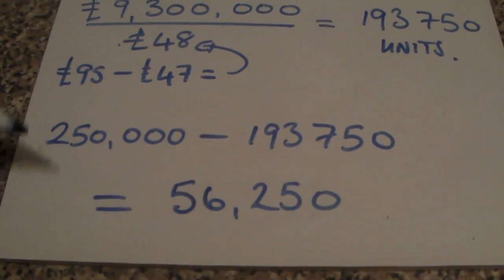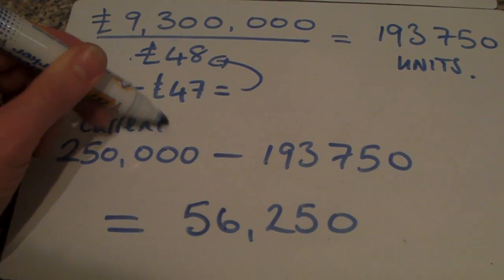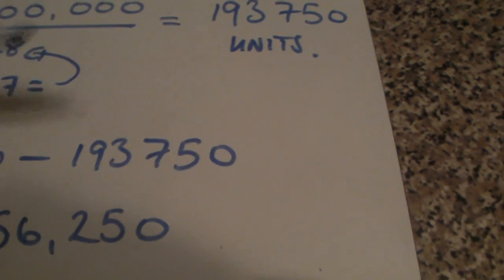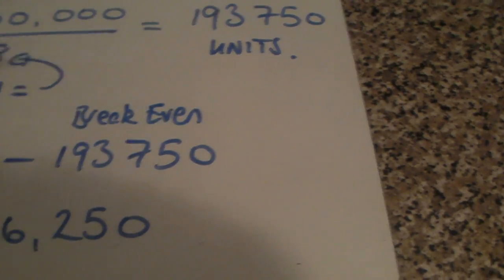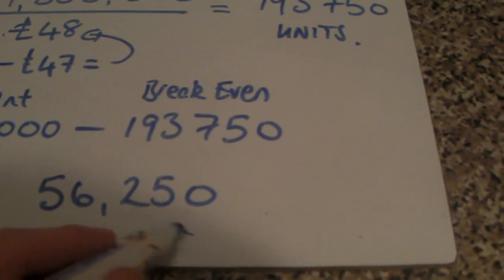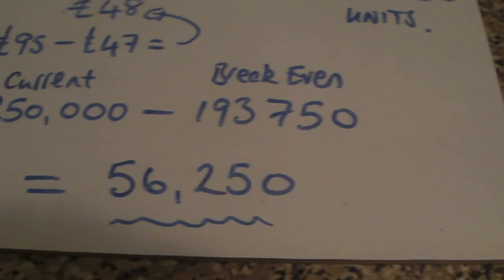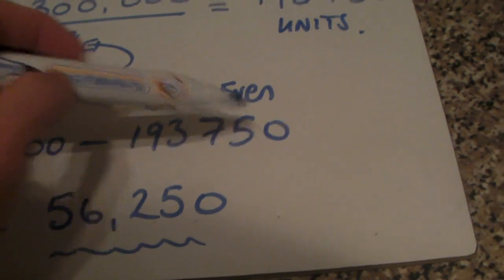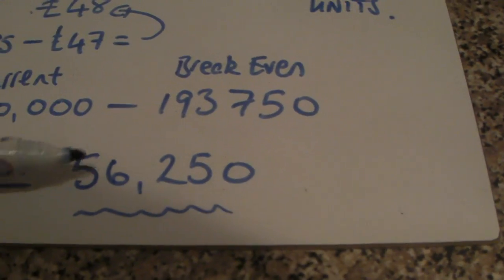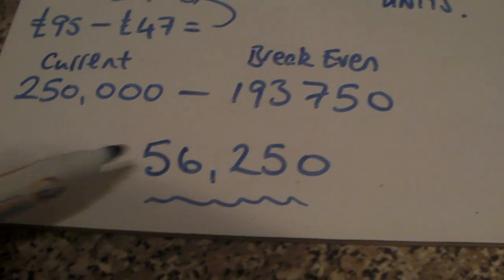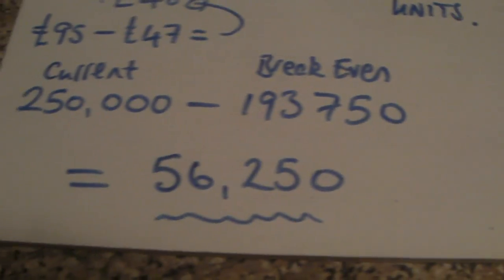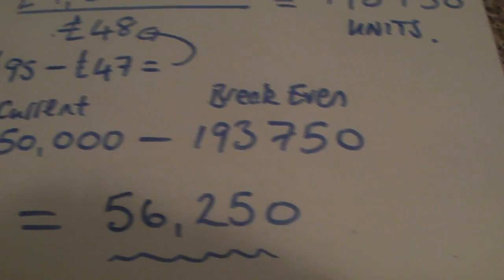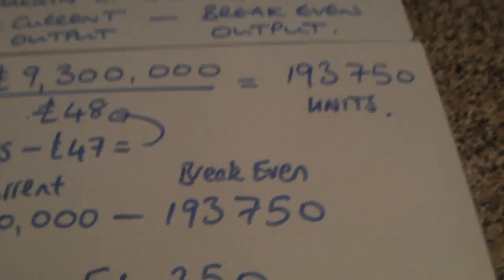For the margin of safety calculation, assume our current or forecast output is 250,000 units. Our breakeven output is 193,750, so that gives us a margin of safety of 56,250. Our output could fall by 56,250 — from 250,000 down toward 193,750 — and at any point above breakeven we'd still make some profit. Once output falls to the breakeven level we make neither a profit nor a loss, and if it falls further we'd be producing below breakeven and making a loss.